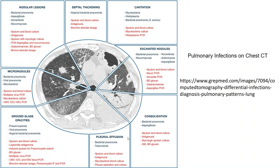This schematic shows some patterns of lung opacity or lung consolidation. For example, in the nodular form, causes include bacterial pneumonia, aspergillosis, nocardiosis, and mucormycosis.